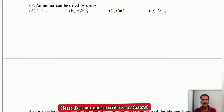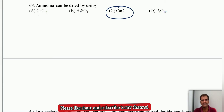Ammonia can be dried by removing moisture using a dehydrating agent. The best choice here is calcium oxide (quicklime). Calcium chloride, sulfuric acid, and phosphorus pentoxide cannot be used because they react with ammonia.